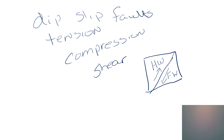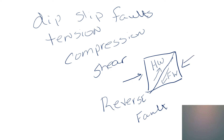The arrows show us that the hanging wall has moved up. If the hanging wall has moved up, that is a reverse fault — the hanging wall has been squeezed over the foot wall by compressional forces. Compressional forces are going to be found at convergent plate boundaries.